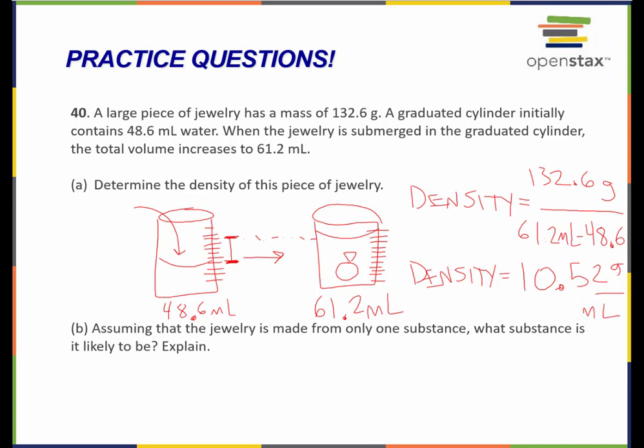Because I had grams in the numerator and milliliters in the denominator, the density is 10.52 grams per milliliter.